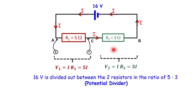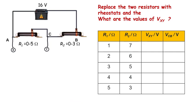V1 should be 10 volts and V2 should be 6 volts. Now let us replace the two fixed resistors with two variable resistors such that the sum of R1 and R2 is always 8 ohms. Can you fill in the table given? Pause the video and fill in the table, then play the video again to check your answers.